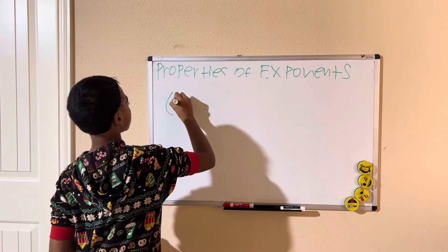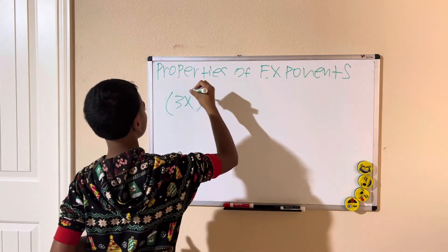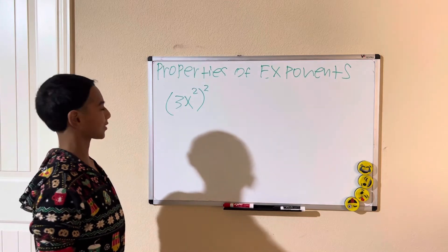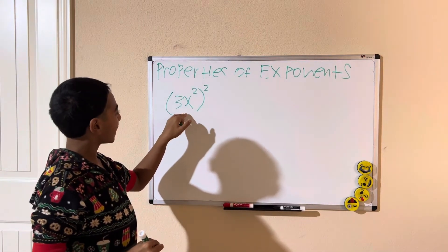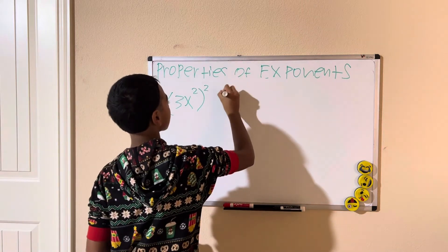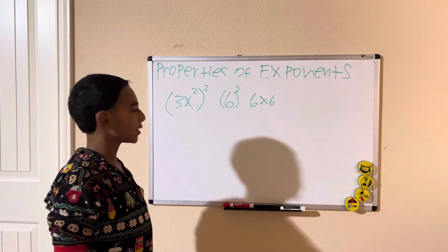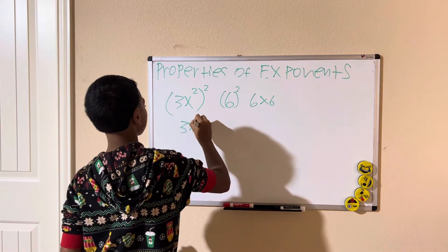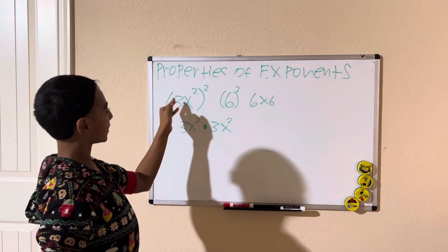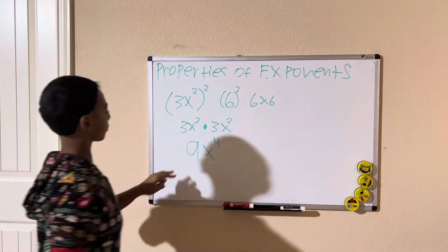Let's do another one: we have 3x squared, and that entire expression is raised to the second power — so (3x²)². When you raise something to a power, you expand it: 3x squared times 3x squared. Multiplying gives us 3 times 3 equals 9, and x squared times x squared equals x to the fourth. So we get 9x to the fourth.